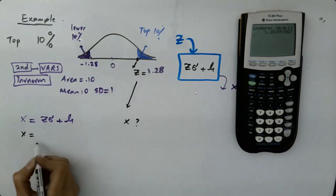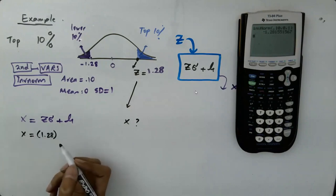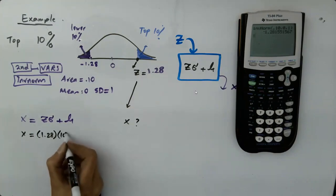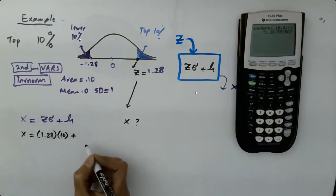Let's just enter all of this information and find our X. X becomes Z, which is 1.28 times sigma. Sigma is given in the question, right?